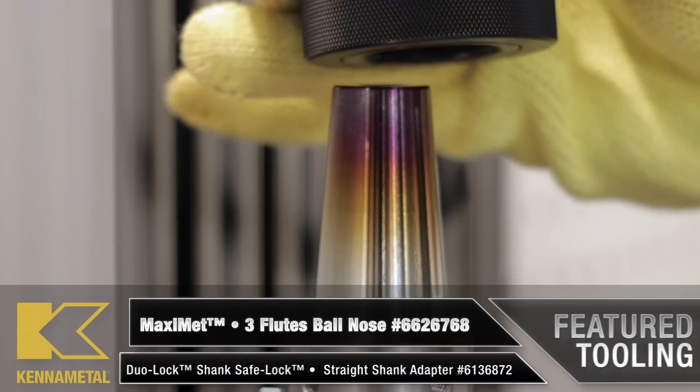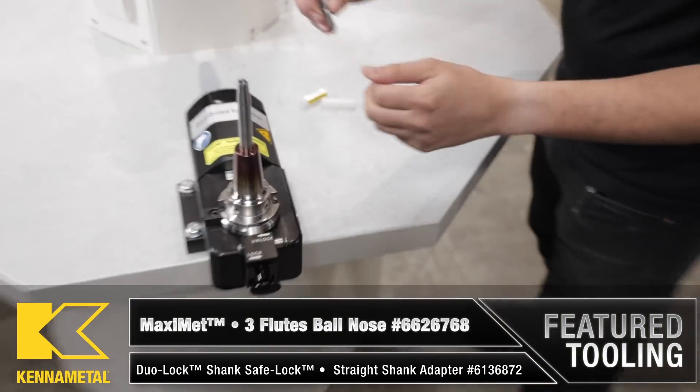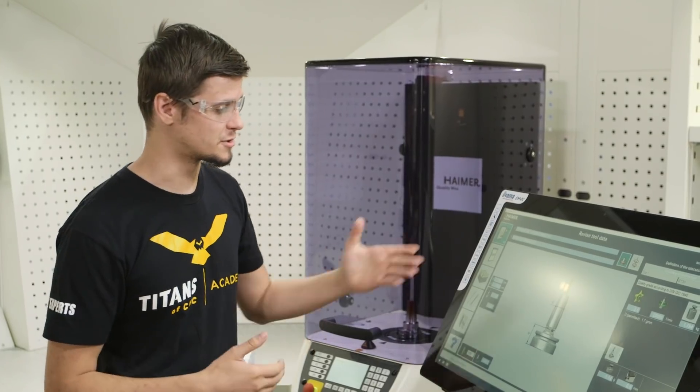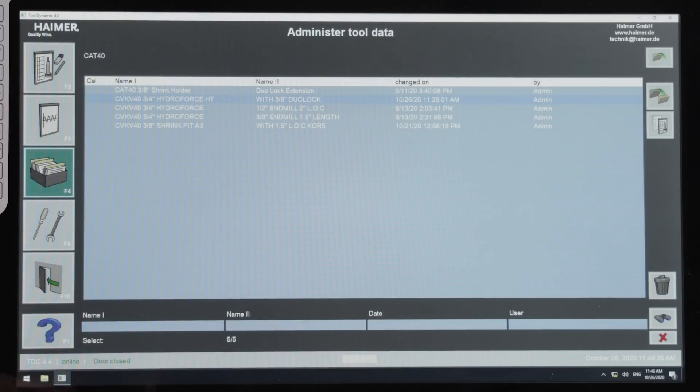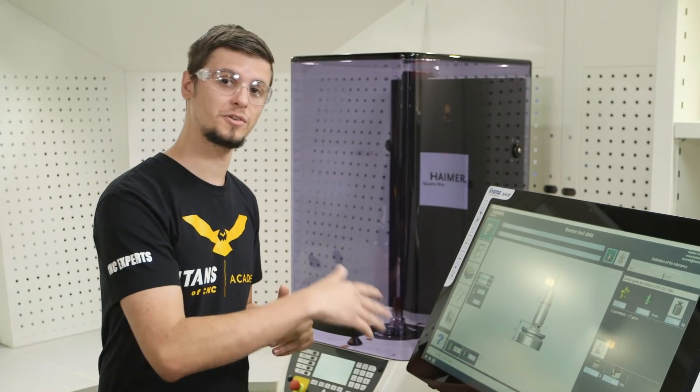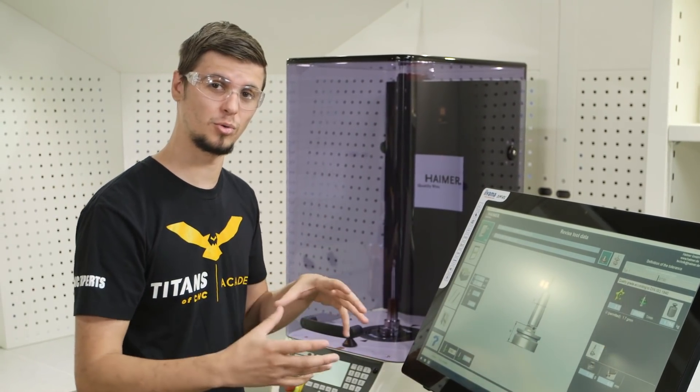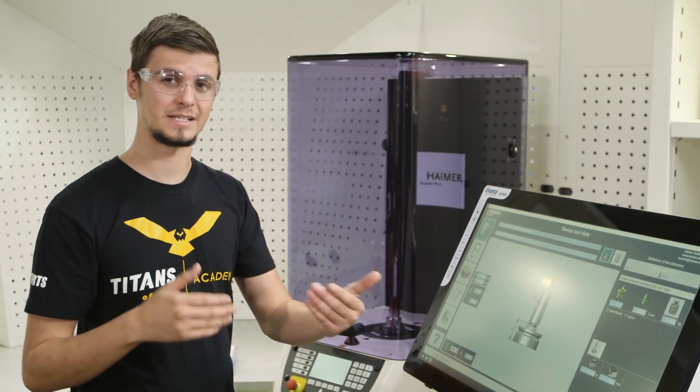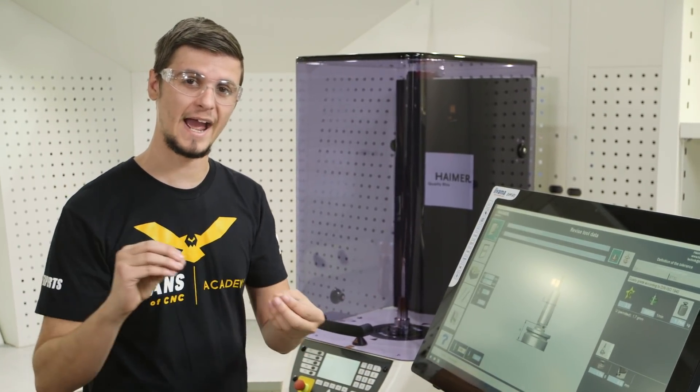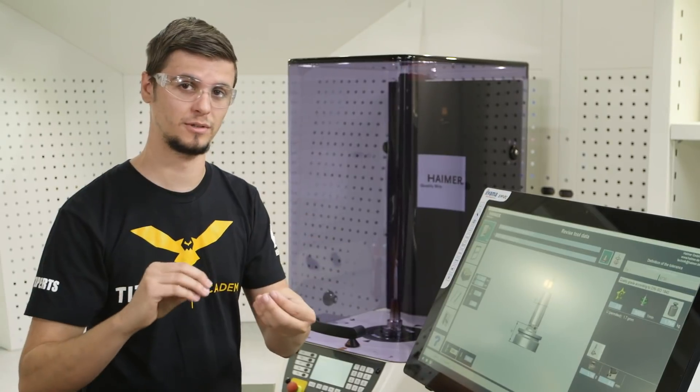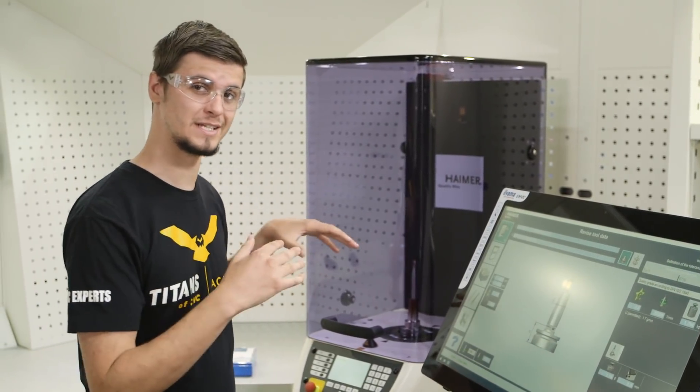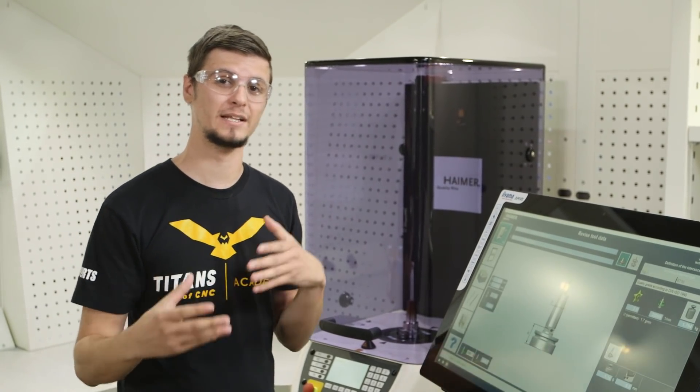Since we have our Kennametal Duo-Lock all shrink fit together, we are now going to complete the process and throw it in the balancer. The balancer features this touchscreen which allows you to quickly navigate and put in all the information needed about the holder, which it will then use to calculate the exact amount of weight that we will need to add into the side of the holder. This is one of the many balancing techniques. We will be using weighted screws.